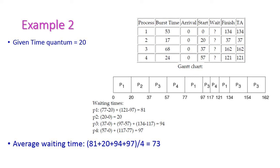Now let us solve a more complicated problem — Example 2 with time quantum 20 milliseconds. We have 4 different processes with their corresponding burst times given. Assume the arrival time is 0 for all processes. With this given data, we have to compute the average waiting time of all the processes.